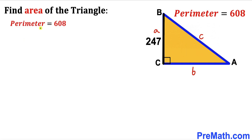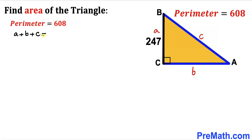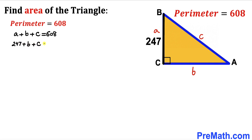We know the perimeter of this triangle is 608 units. The perimeter equals the sum of all three sides: a plus b plus c equals 608. We know a equals 247, so substituting gives us 247 plus b plus c equals 608. Subtracting 247 from both sides gives us b plus c equals 361.